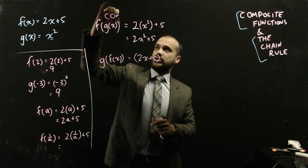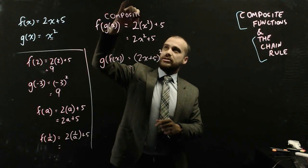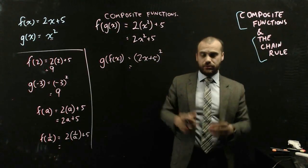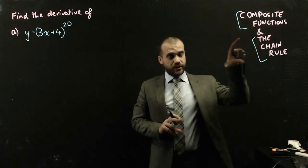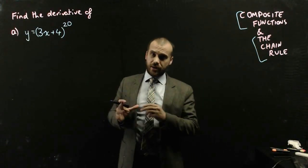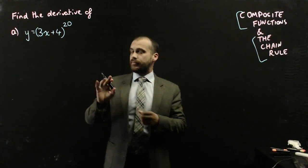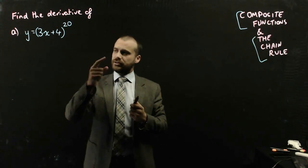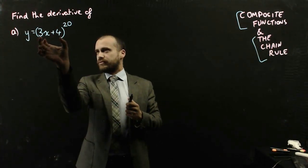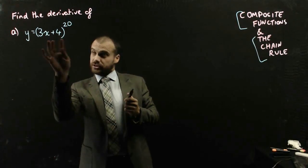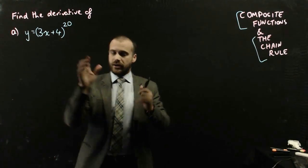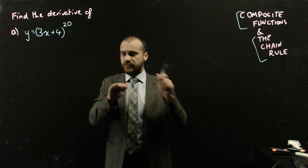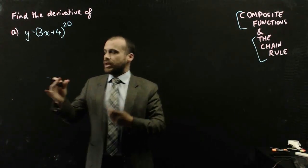So there's our lesson on composite functions. We really only need that lesson so we can talk about the chain rule, because I'm going to use the term composite functions when discussing the chain rule. Time to talk about the chain rule now. Here's an example — it's probably best to start with one because it is a little bit complicated. This is a composite function: y equals 3x plus 4 to the power of 20. I can split that into its individual functions, so I'm going to let 3x plus 4 equal u.